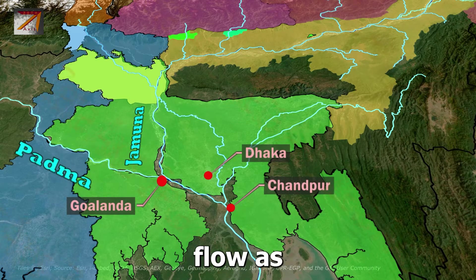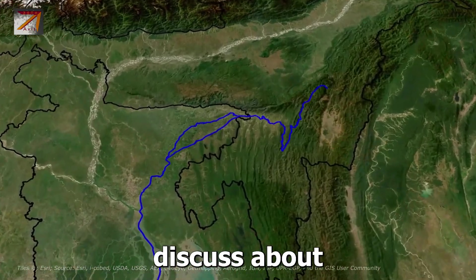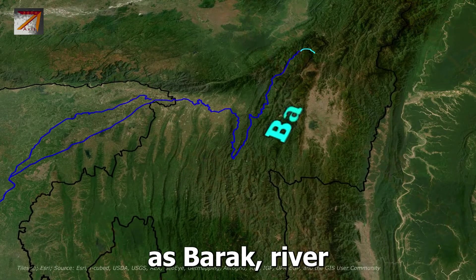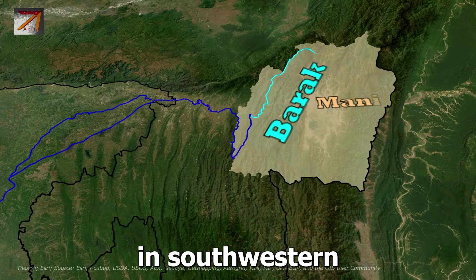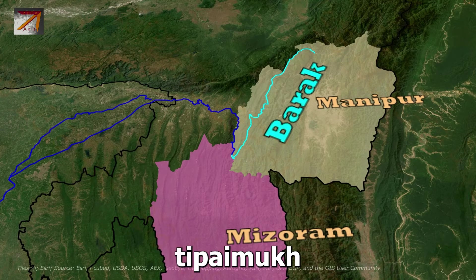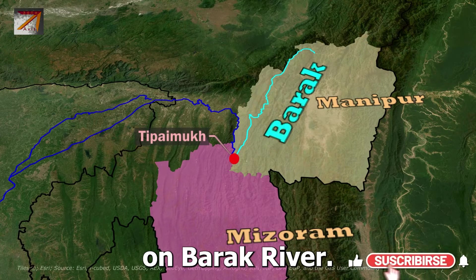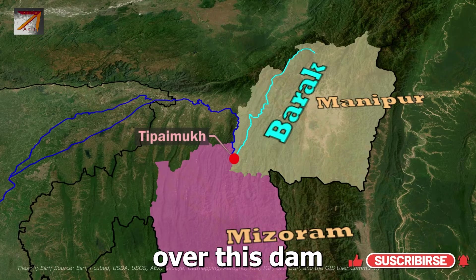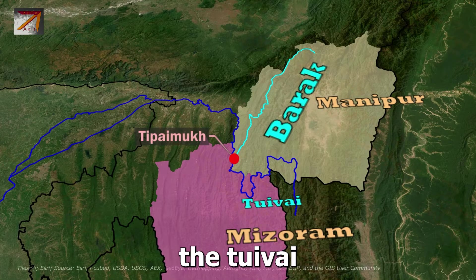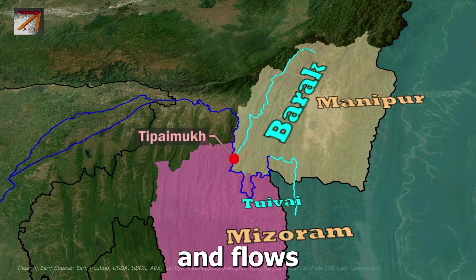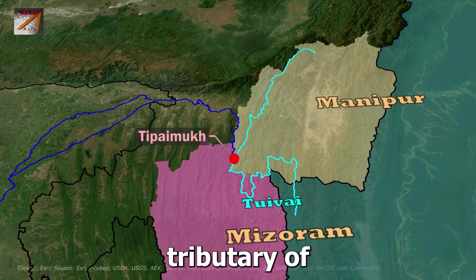Both rivers flow from there as the Meghna into the Bay of Bengal. The Meghna starts as the Barak River in the Manipur hills, originating in Manipur and flowing southwest to Tipaimukh. A dam called Tipaimukh Dam was planned on the Barak River, but Bangladesh has raised concerns over it. At Tipaimukh, the Tuivai River — originating in Myanmar and flowing through Manipur and Mizoram — joins the Barak River. It is the longest tributary of the Barak River.